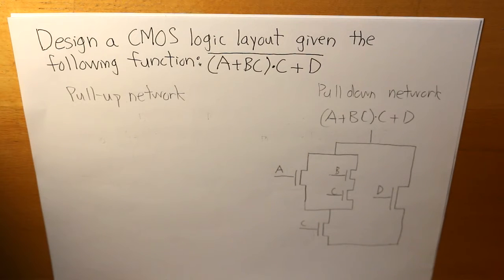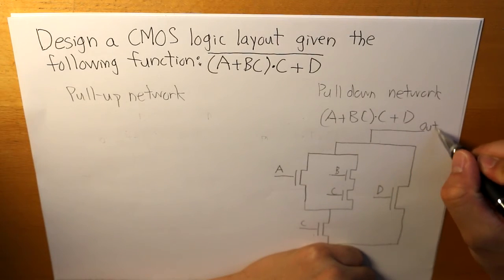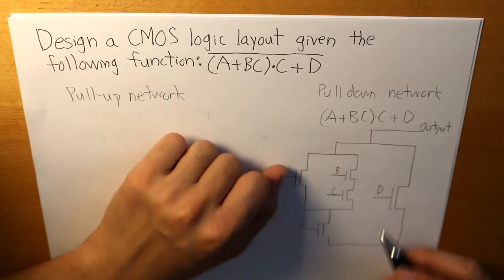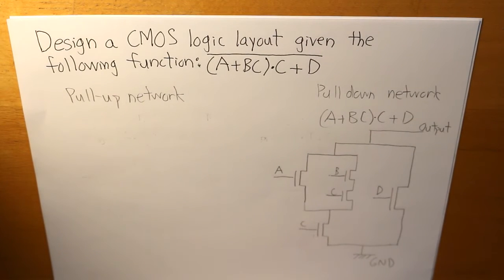And as I've clarified in my previous video about CMOS inverters, is that for a pulldown network, which is the NMOS, the NMOS is connected between the output. So the output is here, and then the ground at the bottom. So that's what our pulldown network is going to be.